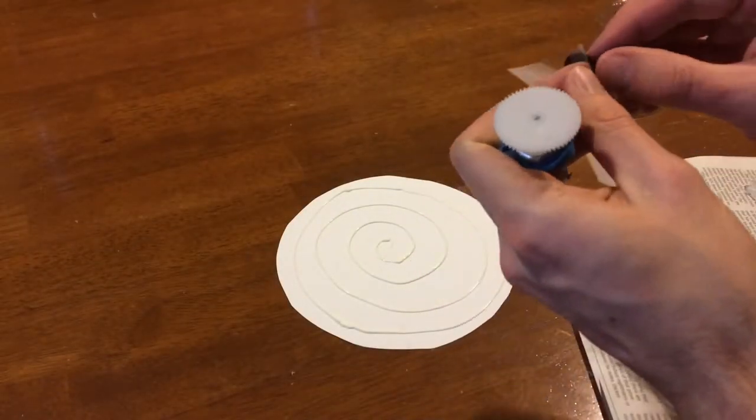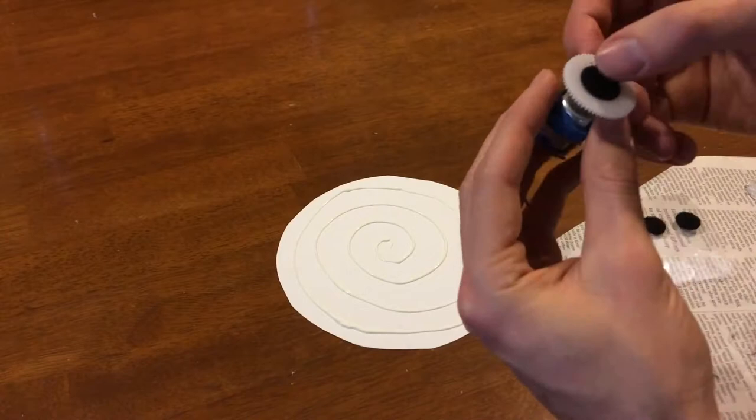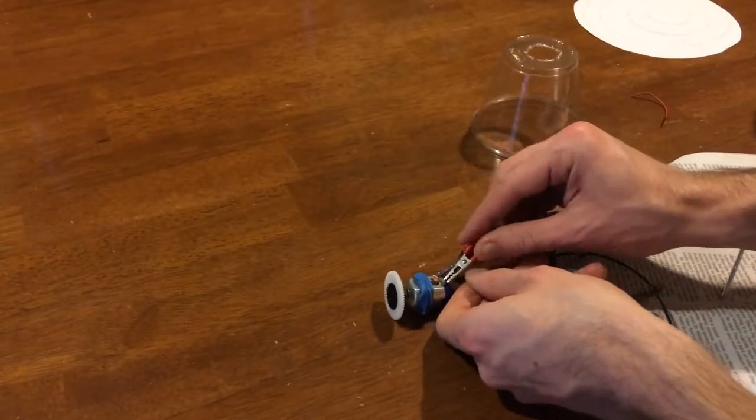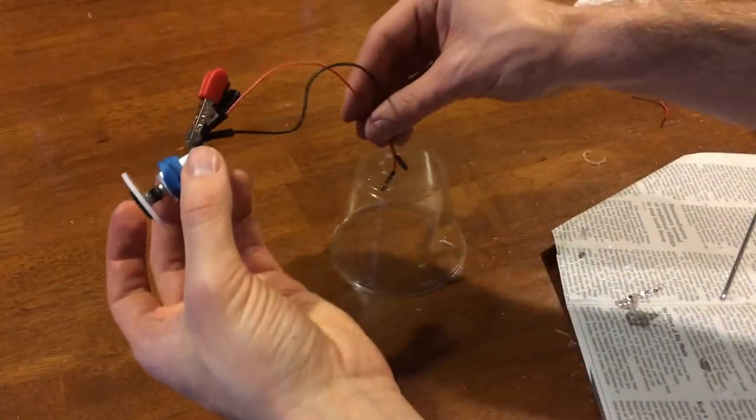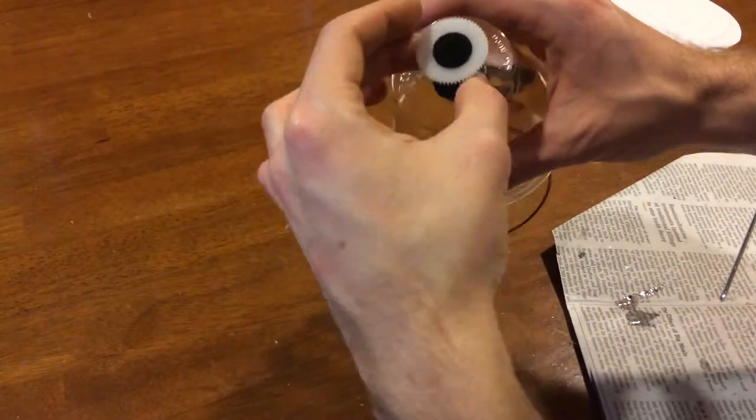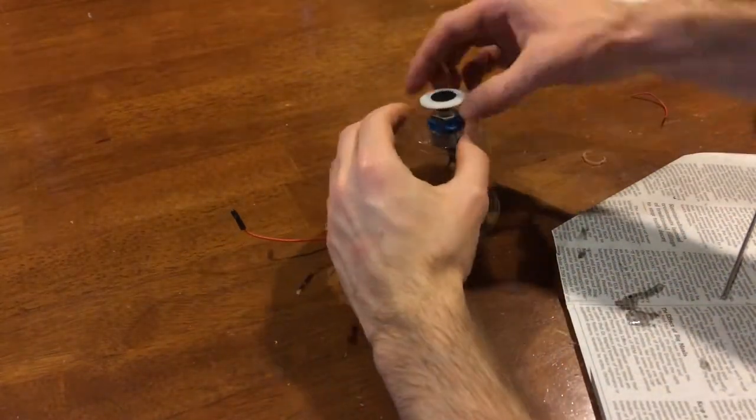Now we can add the other velcro sticker to the gear, and connect wires to the motor with alligator clamps. It actually took a lot longer than this to get the wires and clamps through that hole. A less bulky way of connecting the wires would really help.